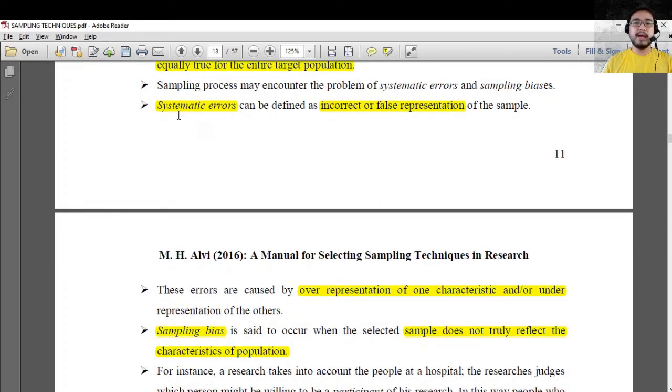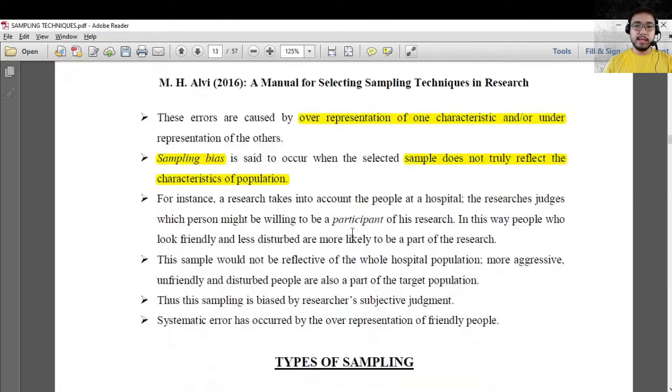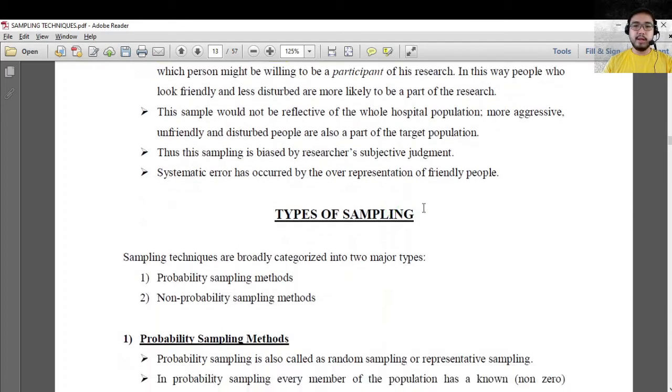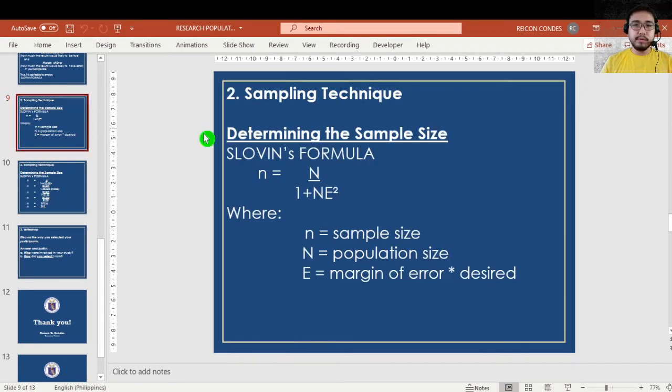However, there could be errors in sampling process like systematic errors where the population is either overrepresented in one characteristic or underrepresented with other characteristics. It could also happen that there is sampling bias when samples do not truly reflect the characteristics of the population. We should avoid these sampling errors and sampling bias. For our next lesson, we will go with the types of sampling. But before that, let me share one of the commonly used sample size determinations.